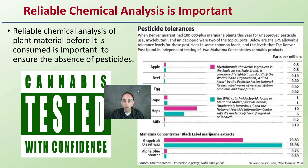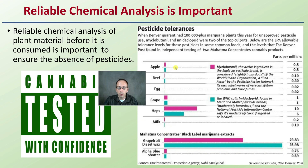Pesticide tolerance levels for other materials are listed here — apple, beef, egg, grape, hops, and milk. We're seeing myclobutanil, which is an active ingredient in Eagle 20, a broad-spectrum fungicide considered slightly hazardous. We also have imidacloprid, an insecticide found in a brand called Merit, considered to be moderately hazardous. We can compare those two across these different crops, and we also see marijuana extracts here, looking at some of the changes in comparison to other crops.